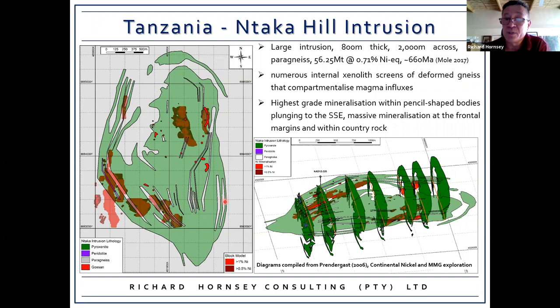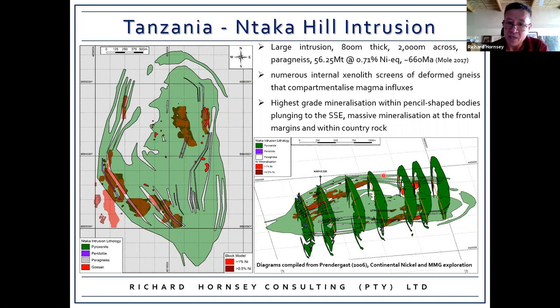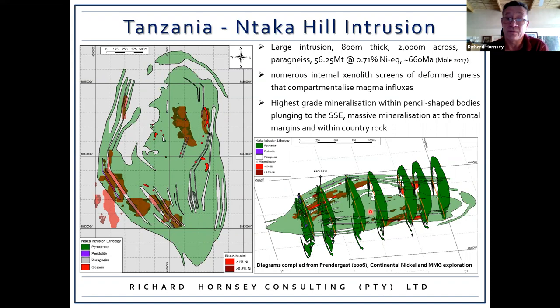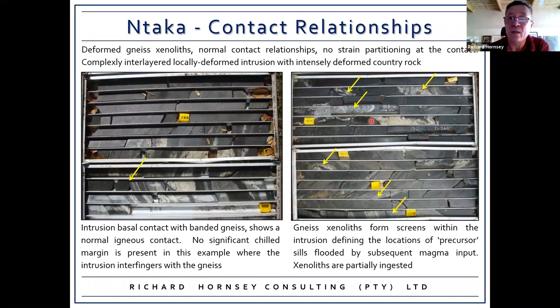The complex outcrop pattern is defined by numerous internal xenolith screens of deformed gneiss that compartmentalize magma influxes into a series of lopolith sills. High-grade mineralization is located within pencil-shaped bodies that plunge down to the south-southeast, and massive mineralization is often located at the frontal margins within the country rock — at the frontal tips of these sills there's often massive sulfide mineralization.